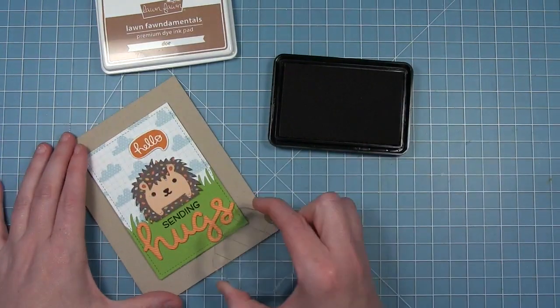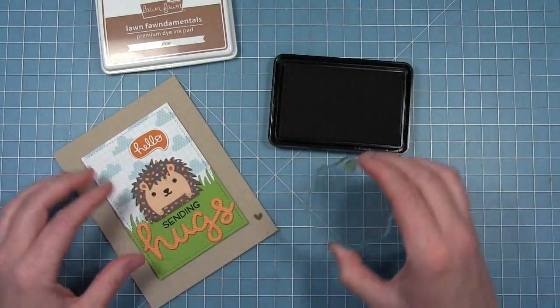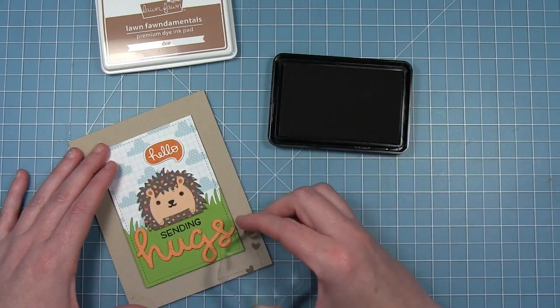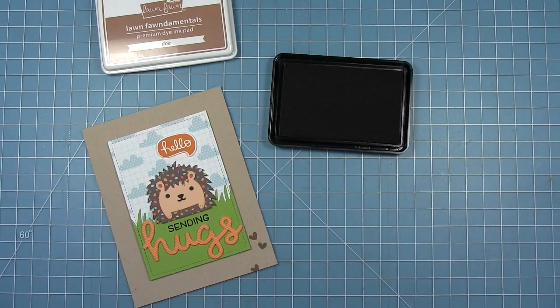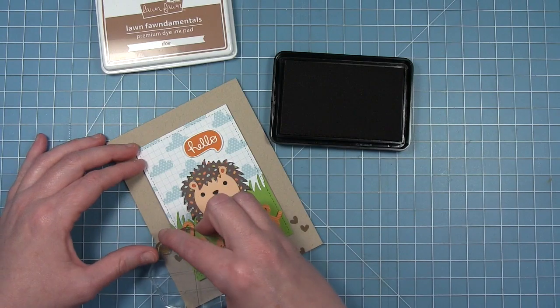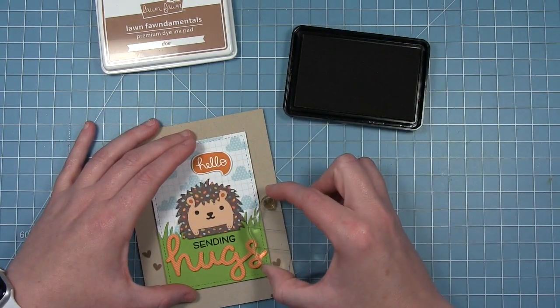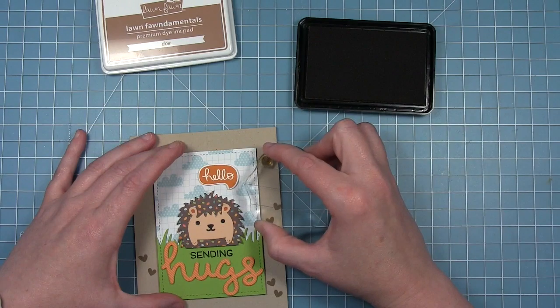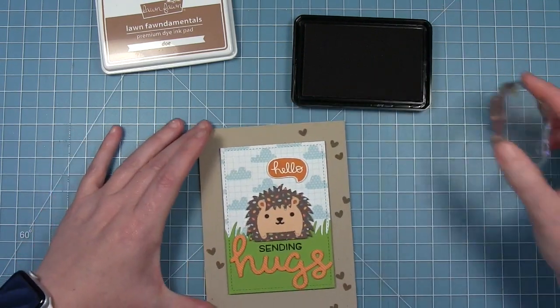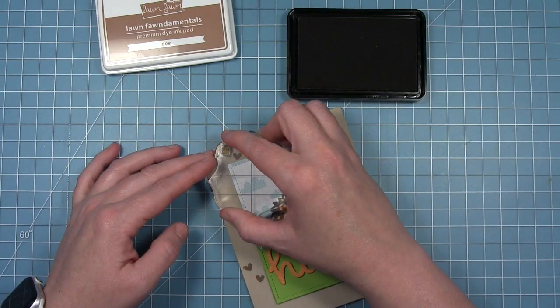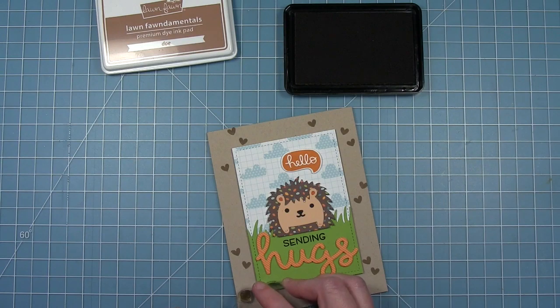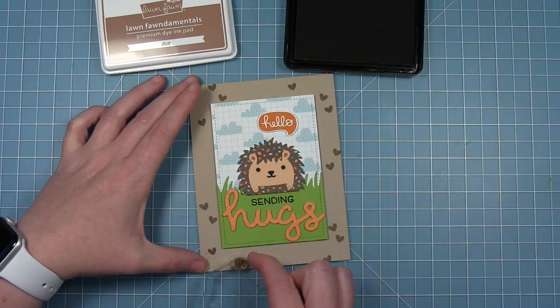I thought that the craft cardstock needed a little bit more interest. So I pulled out the little solid heart that's also in that Into the Woods stamp set. I have some doe ink. I'm just stamping it around on my card base. You could do this before you put the panel on, but I wasn't sure what I wanted to do. I'm just being very careful to make sure that I don't get any ink on the panel that's already on there. This will just create a subtle tone-on-tone inked background with that pattern of those little hearts.